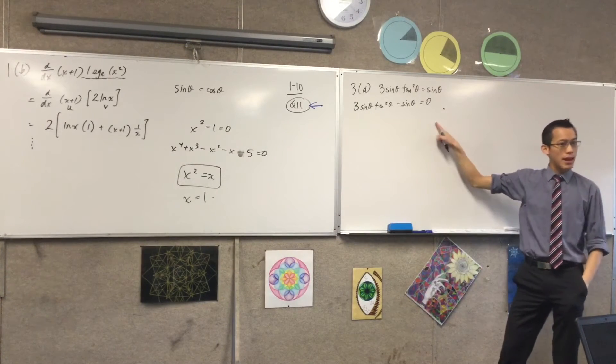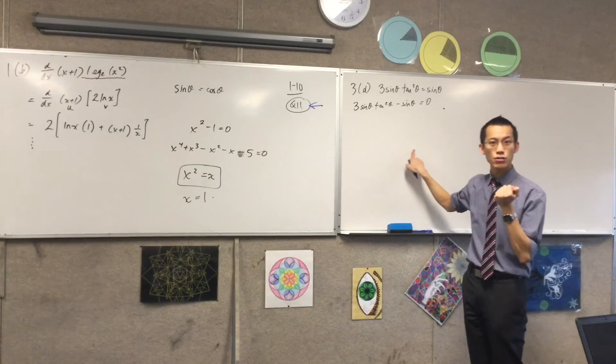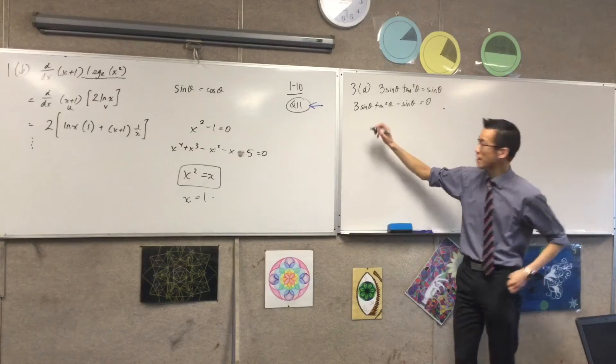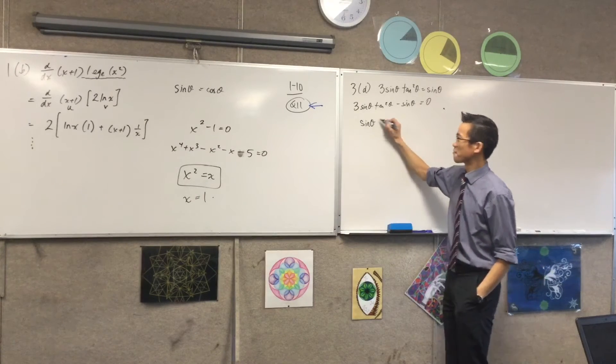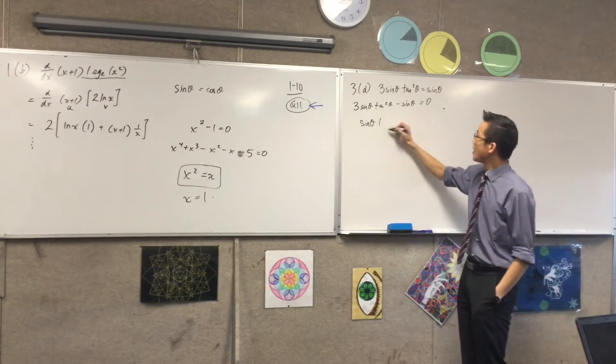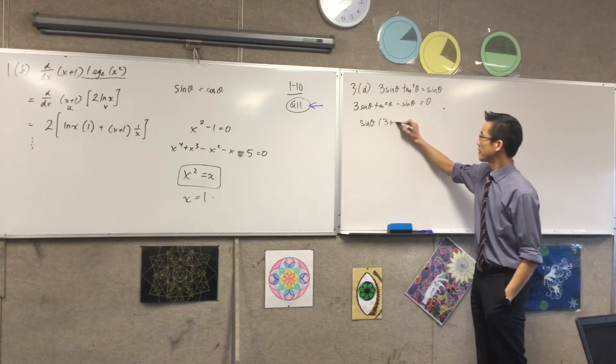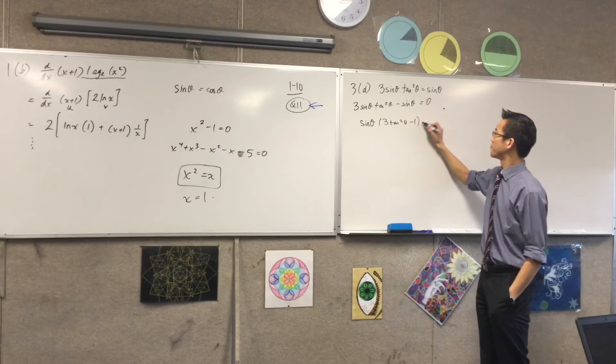So, I've moved everything on one side, and now, instead of dividing through, I should factorize, right? So, I'll take out sine theta. Right? There you go. So, there's the first part. And then, what gets left behind? 3 tan squared minus 1. Good.